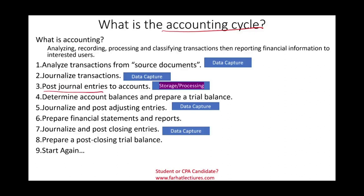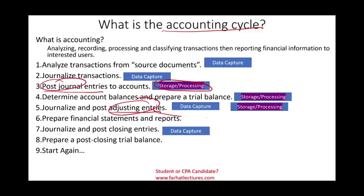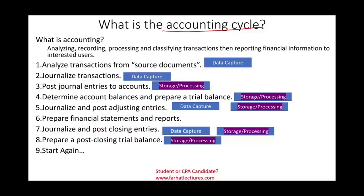When we post — transferring information from the journal to the ledger — this is called storage and processing. We're taking the information and grouping all cash transactions together, all revenues together, all expenses together. Preparing the trial balance is also storage, as we store all the account balances after processing. Posting adjusting entries and preparing a post-closing trial balance are similarly part of storage and processing, since we are updating and changing figures in the accounts.